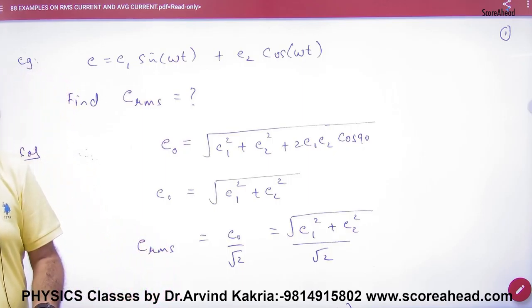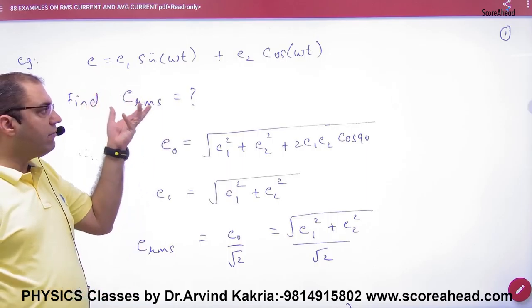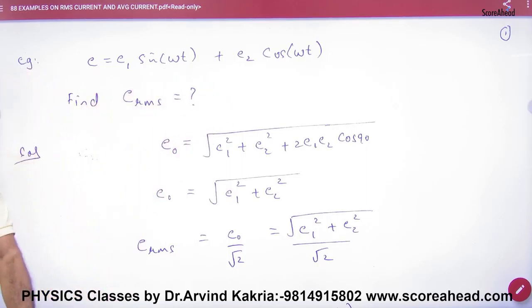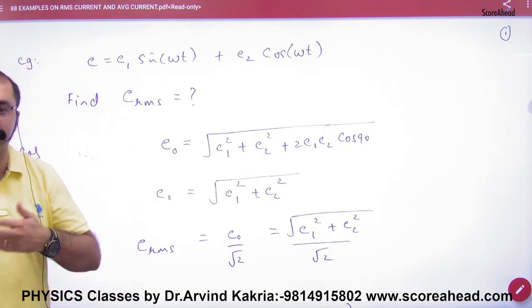And what do we know about RMS value? E₀ by root 2. But remember that your EMF is sin and cos. Then how will the net EMF get out? How will the maximum EMF get out? How will the RMS value get out?